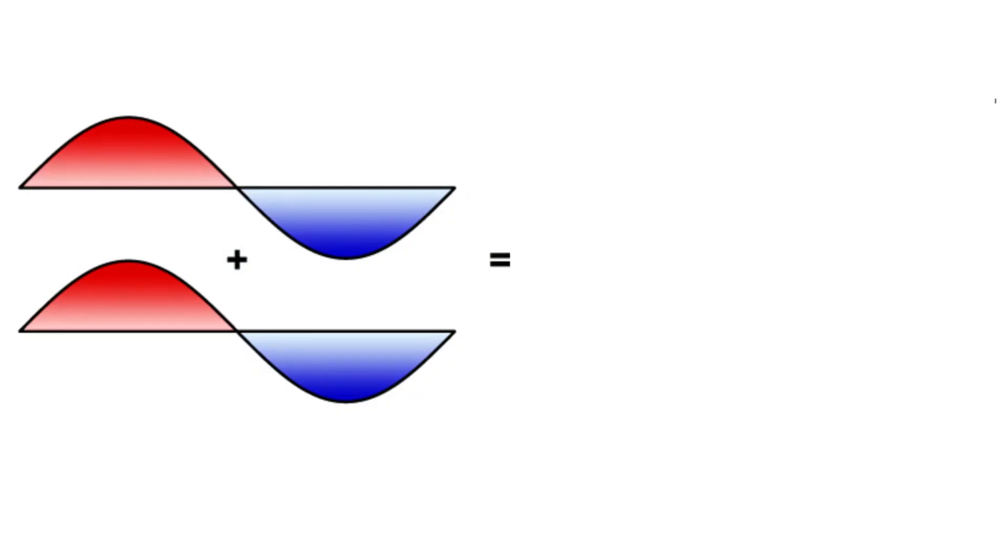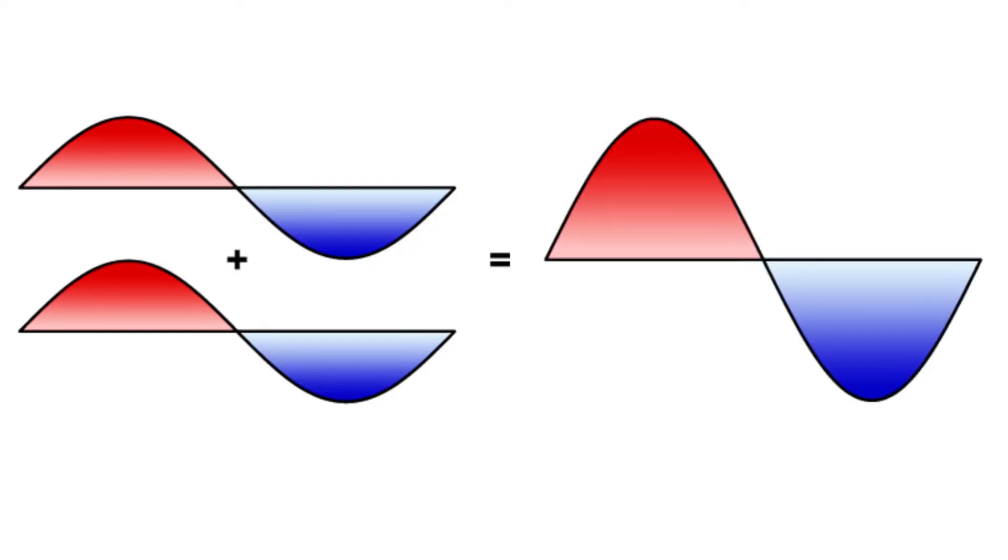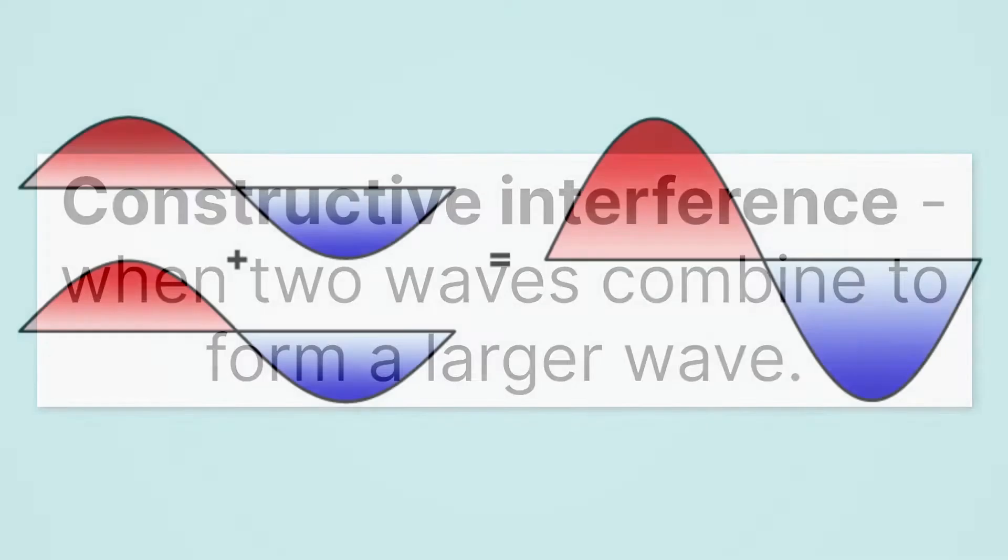Here, we can picture interference much more neatly. We have two waves adding together. The red is overlapping with the red and the blue with the blue. In other words, the peaks overlapping with the peak and the troughs with the troughs. When they add together, we get a bigger wave. We call this constructive interference. That's when two waves combine to form a larger wave.